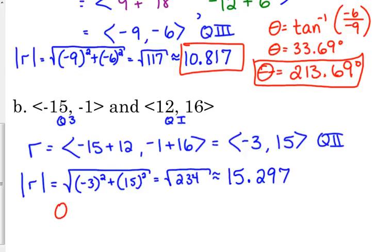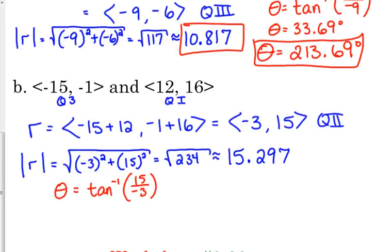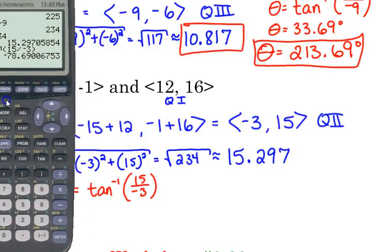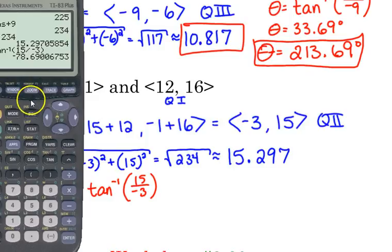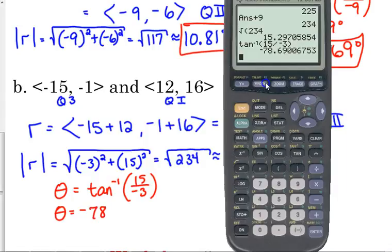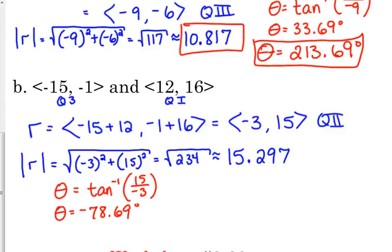Our angle, theta, is the inverse tangent of 15 over negative 3. Negative 78.69 degrees. Is that in the third quadrant? Or, excuse me, second quadrant. It should be in the second. That is not in the second. That is in the fourth.